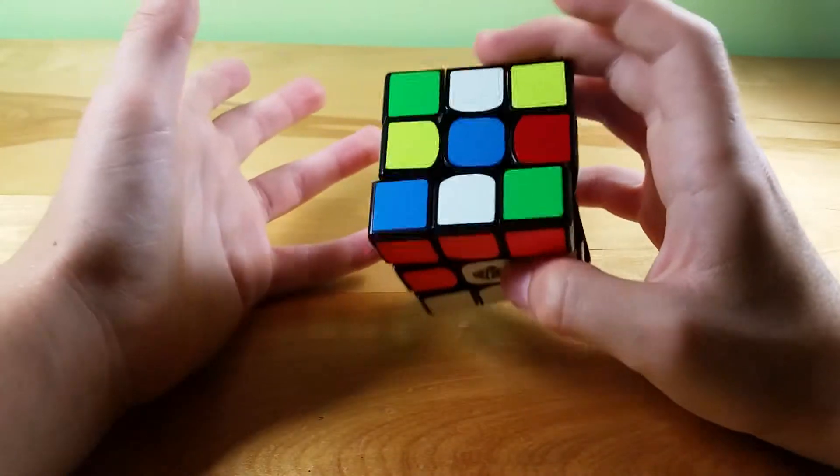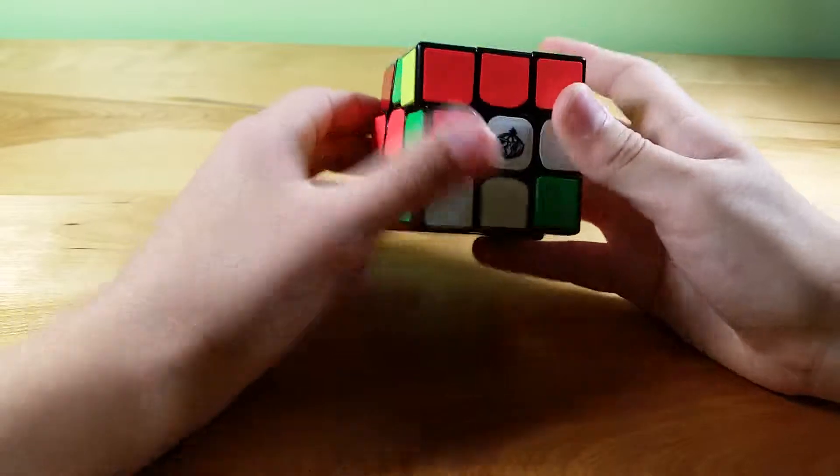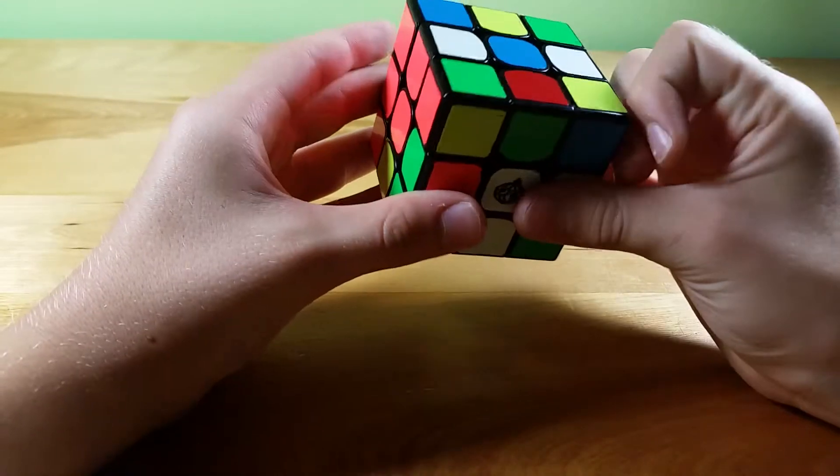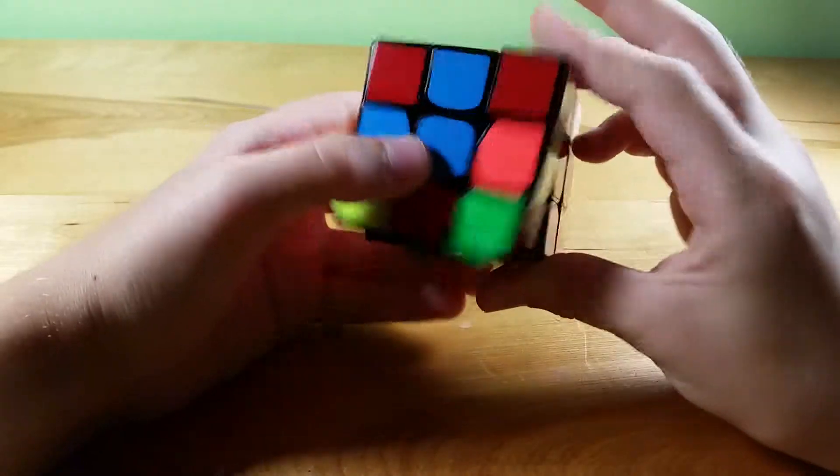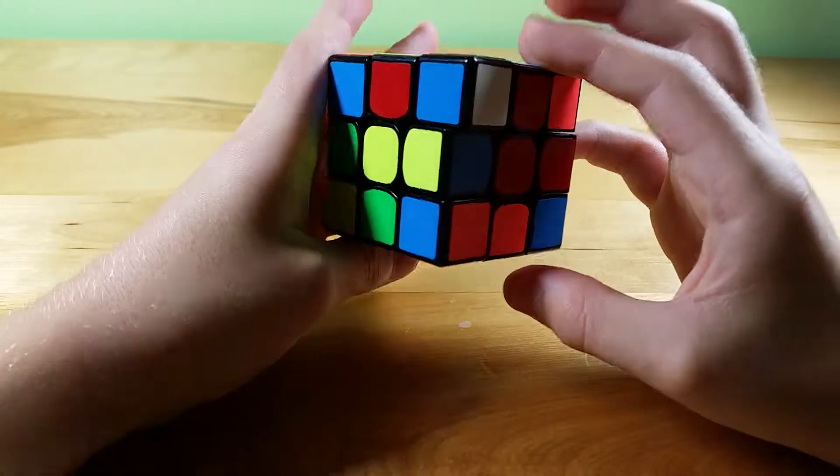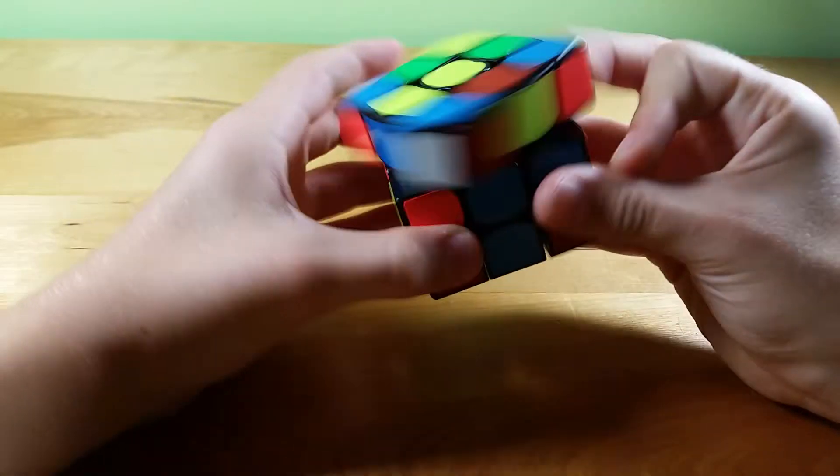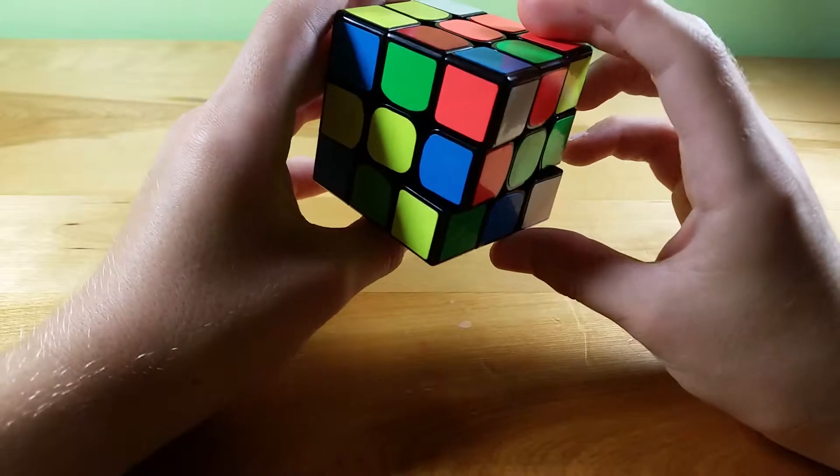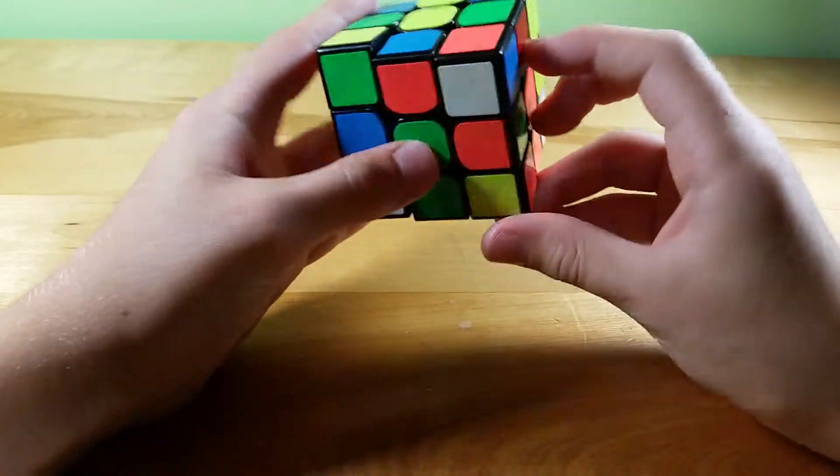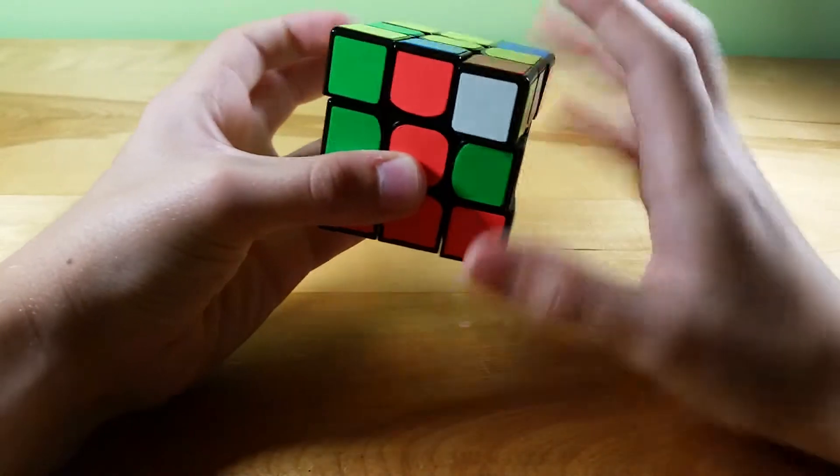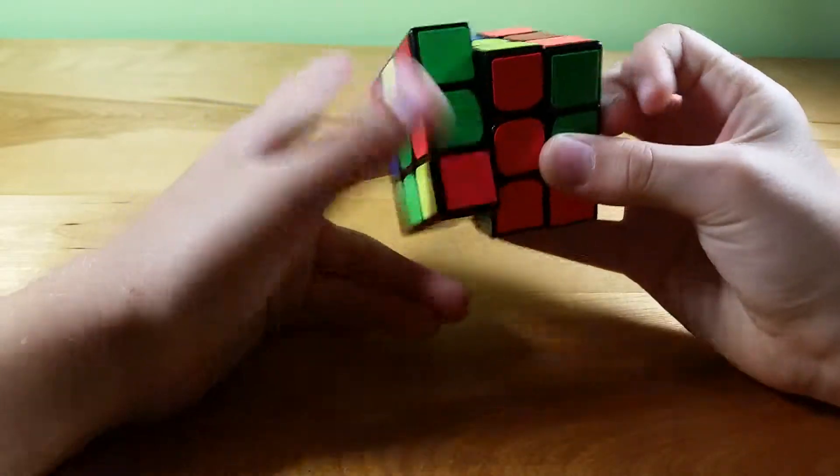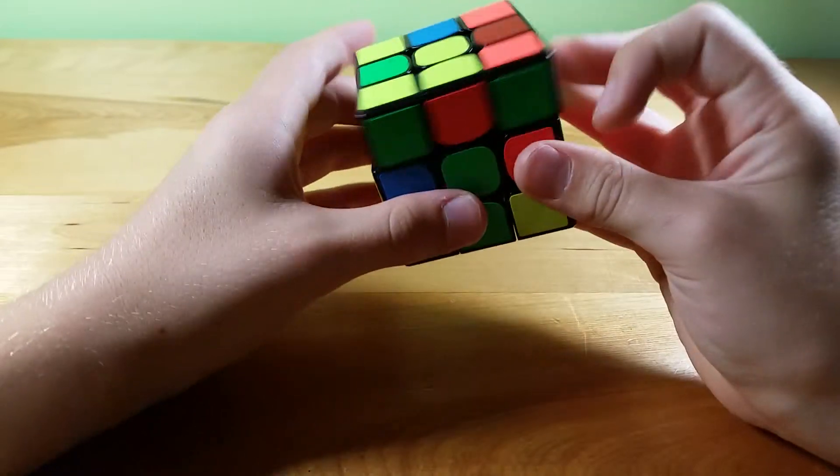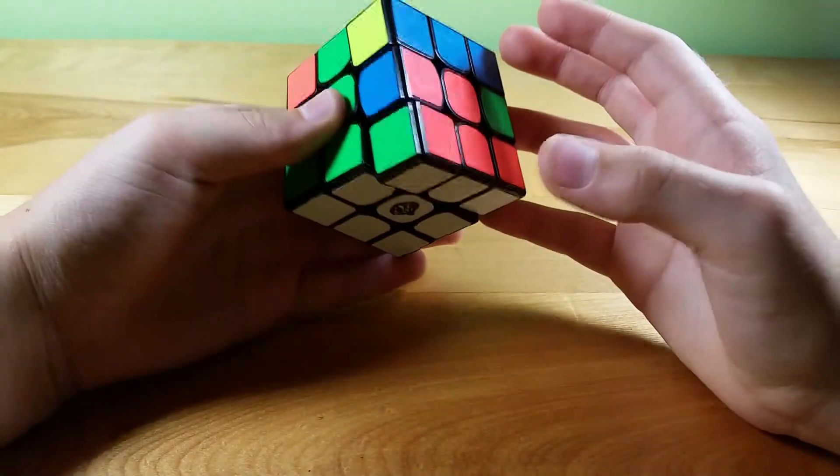I would basically go like this for cross. I see these two are solved, so bring that one down then insert that one and bring it down. Looking around for a corner I see this one so I can insert that like that and then I would probably see this one so I'd rotate, insert that, and then this one insert, and then where's the last one, right here, insert.